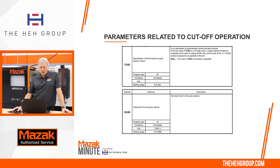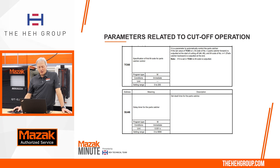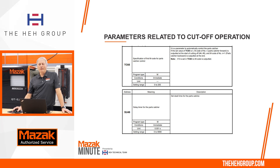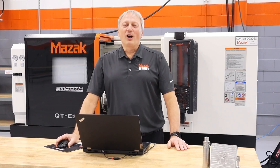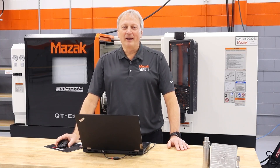Before the operation starts cutting, if you want to delay the cutting operation slightly to give the parts catcher time to advance, you have parameter SU49 — that's going to be in increments of 0.001 seconds, so a value of 1000 will give you one second. I hope you found this review helpful. I'll see you next time on the Mazak Minute.